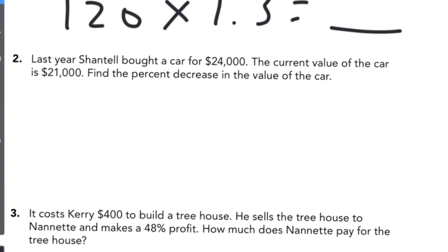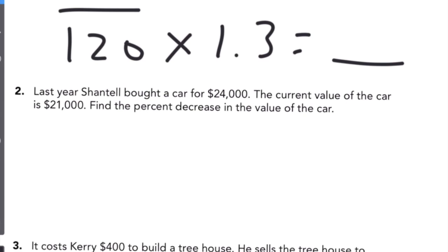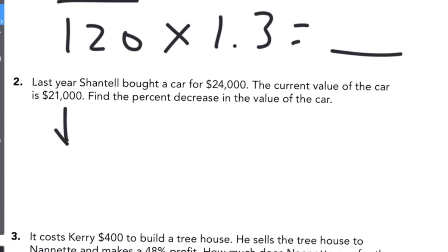Number two says last year Chantel bought a car for $24,000. The current value of the car is $21,000. Find the percent decrease. Decrease means to go down. We look at $24,000 and $21,000 and you should be able to figure out that it decreased by $3,000.